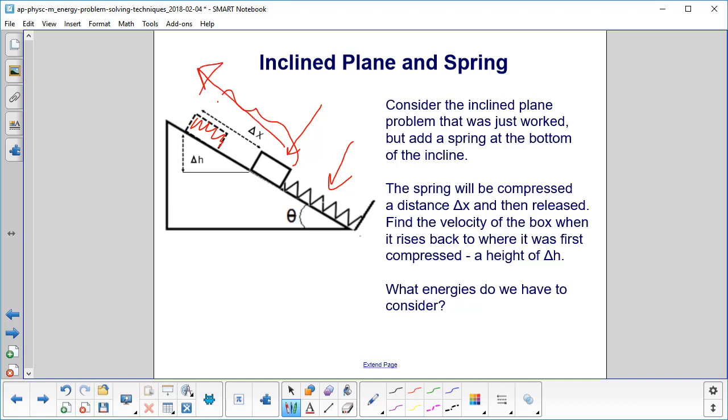So we want to find the velocity of the box when it rises back to where it was first compressed. That's this point here, we'll call that delta h, and you can hopefully already see the relationship there, and we'll draw it out anyway. This is going to be delta x, this is our delta h, and this angle will be theta.